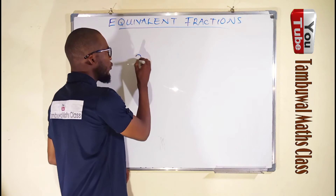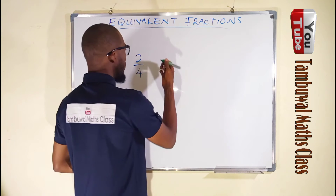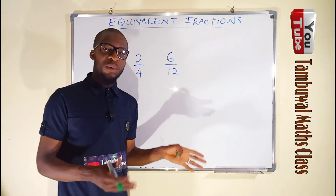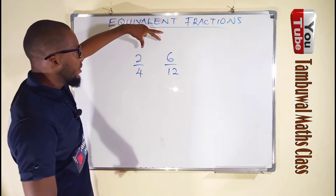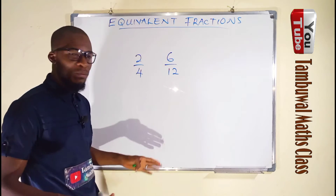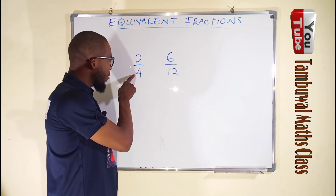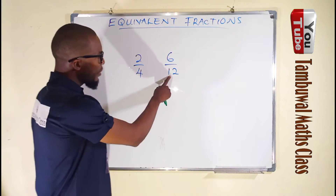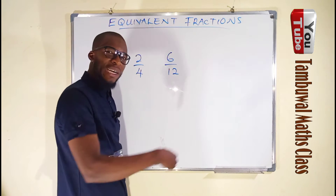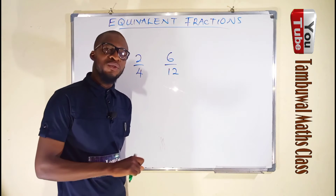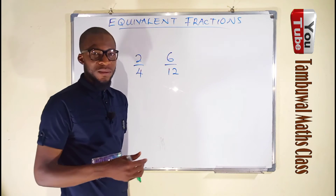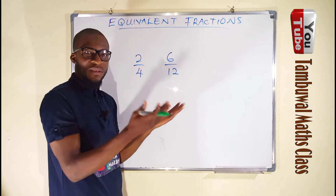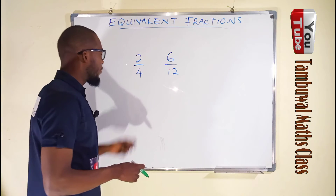Suppose we have two fractions: two over four and six over twelve. We say these two fractions are equivalent because the ratios of their corresponding numerator to that of their denominator are the same. Four, which is our denominator, is two times our numerator which is two. Twelve is two times our numerator which is six. Therefore they are equivalent — the ratio of numerator to denominator is exactly the same.